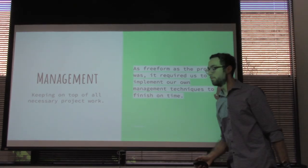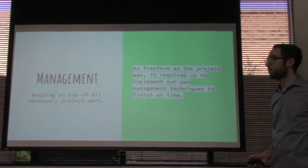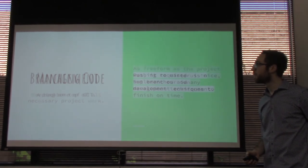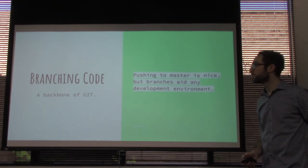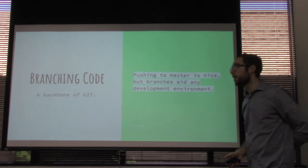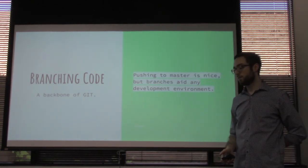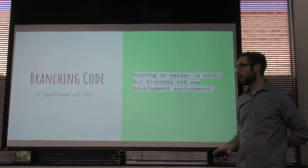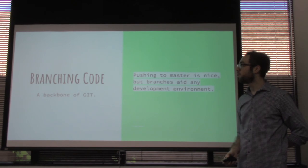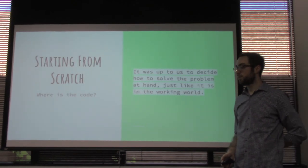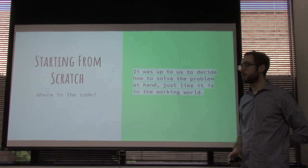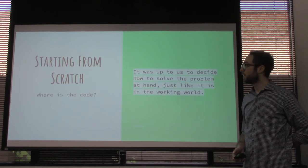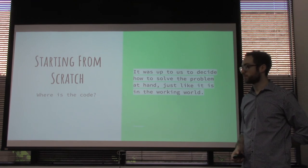Another thing we learned was management techniques. Since the project was pretty freeform, we made our own management style and ended up going with Scrum. We also learned about branching code — before we branched, we were committing everything to master, which was easy at first until we started stepping on each other's toes. Branching also required more code review by everyone. Finally, starting from scratch on a blank slate taught us how to figure out the direction of a project.